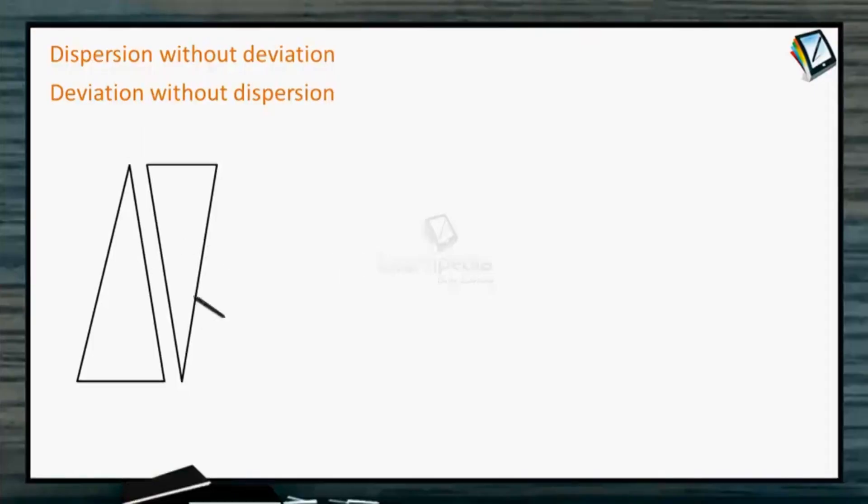Now, here is a situation. Suppose there are two prisms of different materials having different geometries. For example, suppose here this angle is A, and for this prism the angle is A dash. And similarly, the other values are also written.